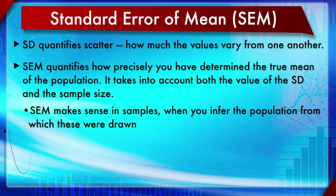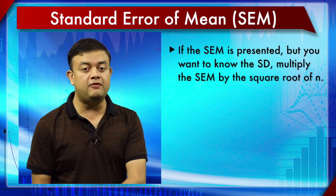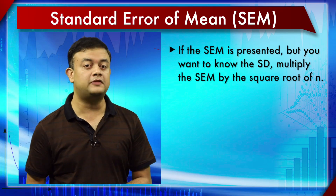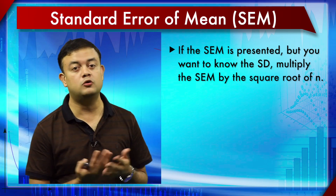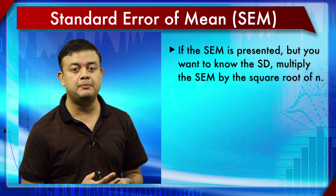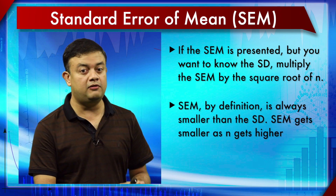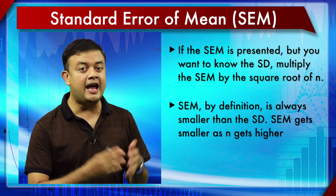SEM can be computed by a very simple equation: standard deviation divided by the square root of n. If you know the standard deviation and the size of the data set, you can calculate SEM without the raw data. Conversely, if the SEM is presented but you want the standard deviation, just multiply SEM by the square root of n.